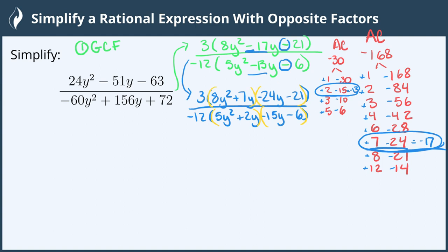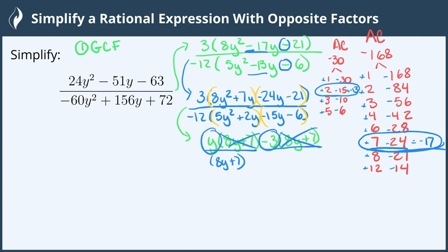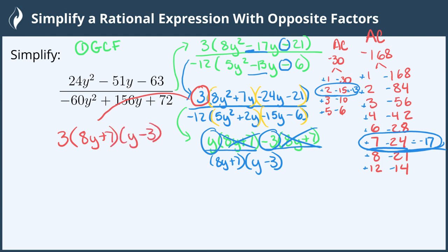Now we factor by grouping in the numerator. The greatest common factor between 8y squared and 7y is y, giving us y times (8y plus 7). The greatest common factor between negative 24y and negative 21 is negative 3, which leaves us with positive 8y plus 7. We now have two terms with common factor (8y plus 7), and factoring that out leaves y minus 3. So the factored numerator is 3 times (8y plus 7) times (y minus 3).